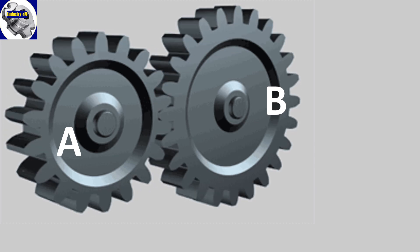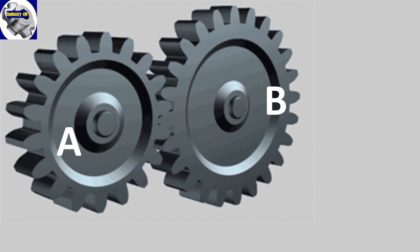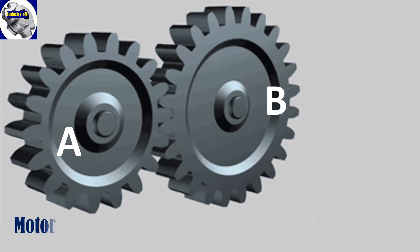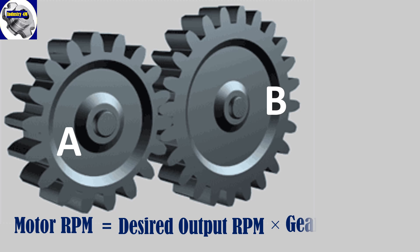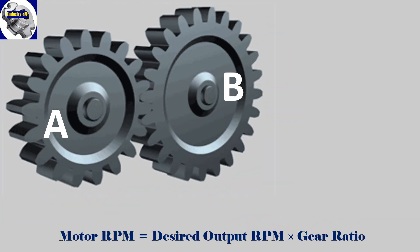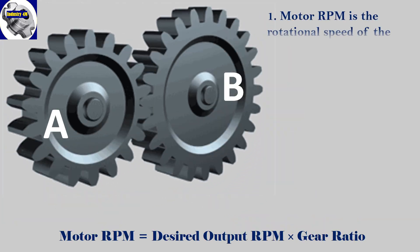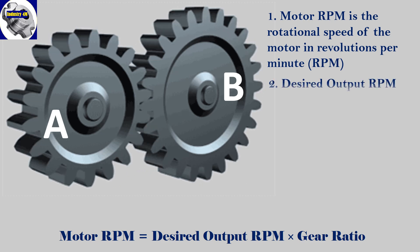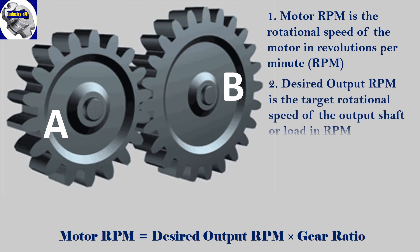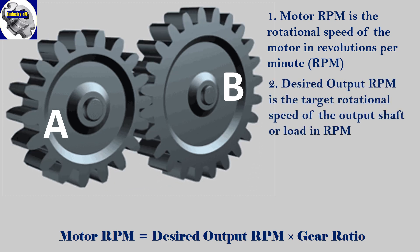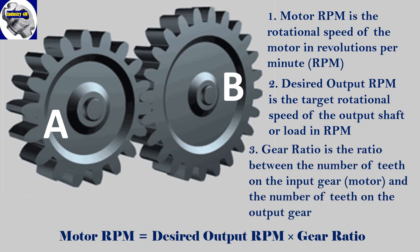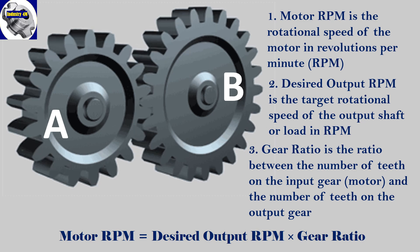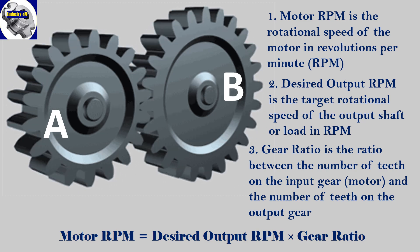To calculate the RPM output of a gear drive mechanism with a given gear ratio and motor RPM, you can use the following formula: Motor RPM equals desired output RPM multiplied by the gear ratio, where motor RPM is the rotational speed of the motor, desired output RPM is the target rotational speed of the output shaft, and gear ratio is the ratio between the number of teeth on the input gear (motor) and the output gear.